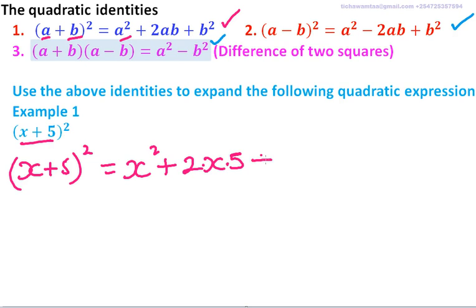And then we have plus 5 takes the place of b, so we have 5². And therefore now our expansion is x². 2 multiplied by 5 is 10, and then multiplied by x, we get 10x plus 5² is 25. So that is how you expand using the identity, the quadratic identity.